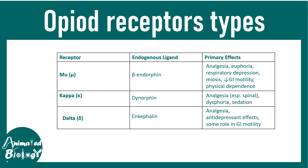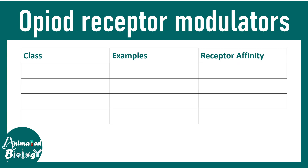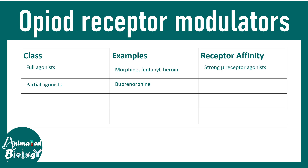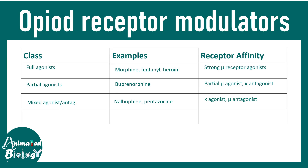Overall, looking at all these receptors and opioid signaling, one thing is common: analgesia, because each of these opioids modulates the pain relay and pain modulation pathways in the brain. There are different kinds of opioid receptor modulators: full agonists like morphine, fentanyl, and heroin are strong agonists for mu receptors; partial agonists like buprenorphine act on kappa and mu receptors; mixed agonists/antagonists such as nalbuphine and pentazocine are kappa agonists and mu antagonists; and pure antagonists such as naloxone and naltrexone are mu receptor antagonists.